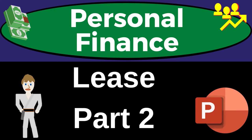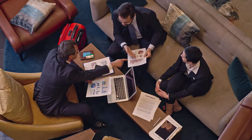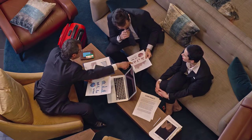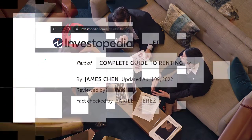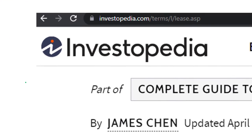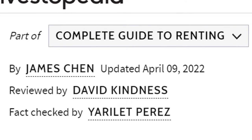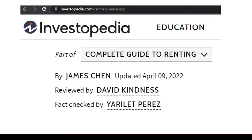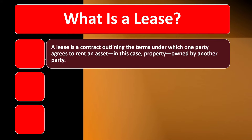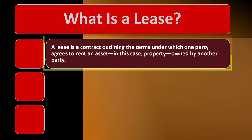Personal finance PowerPoint presentation, lease part number two. Get ready to get financially fit by practicing personal finance. Most of this information can be found at Investopedia — a complete guide to renting by James Chen, updated April 9, 2022. You could go there for more references and resources to continue your research.